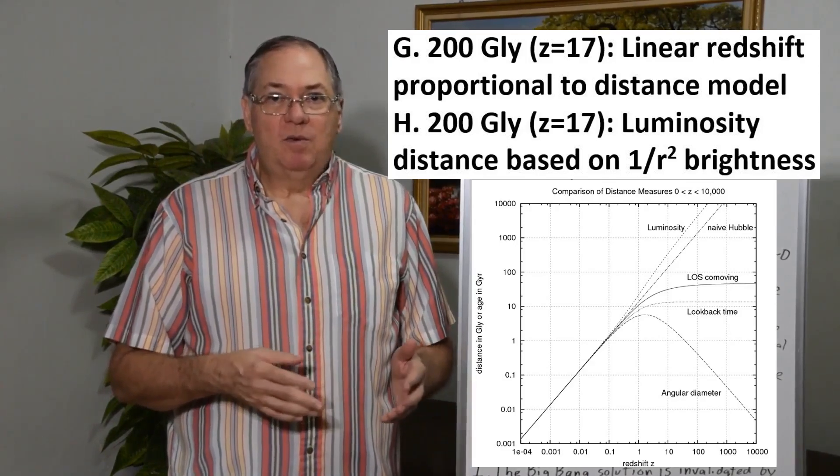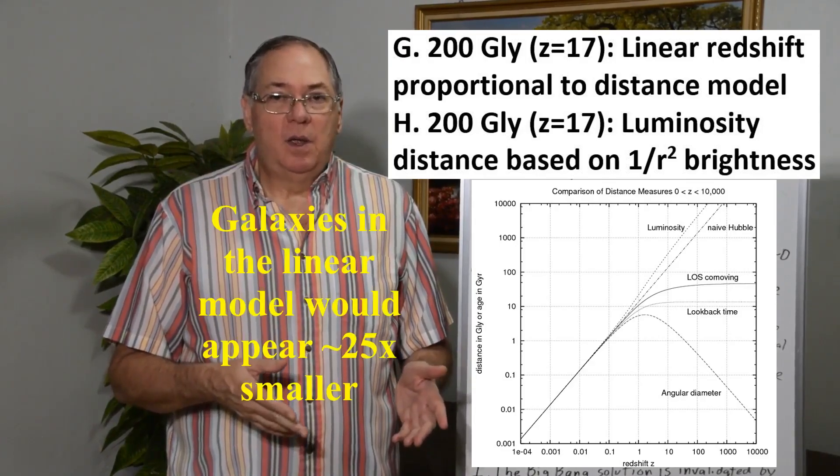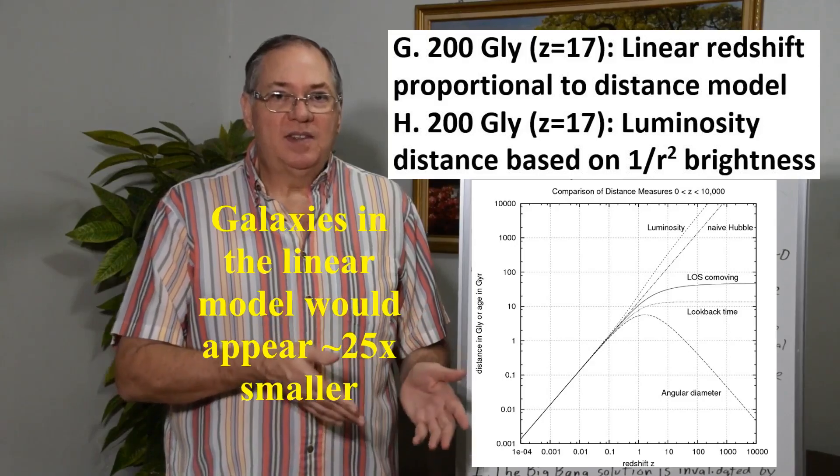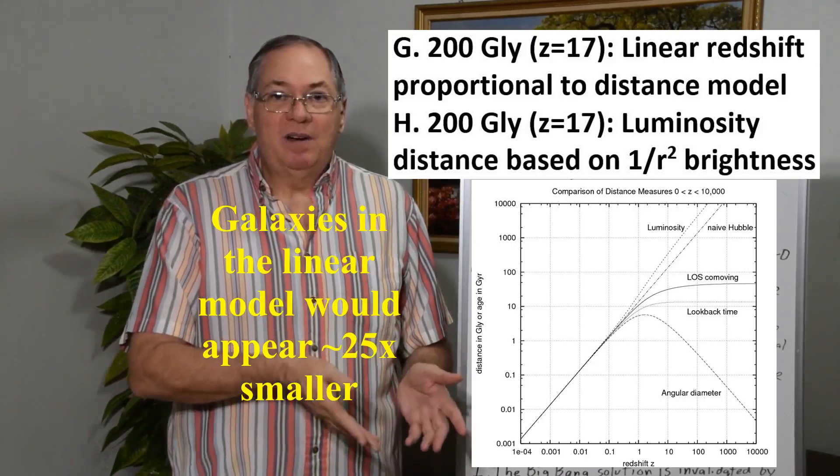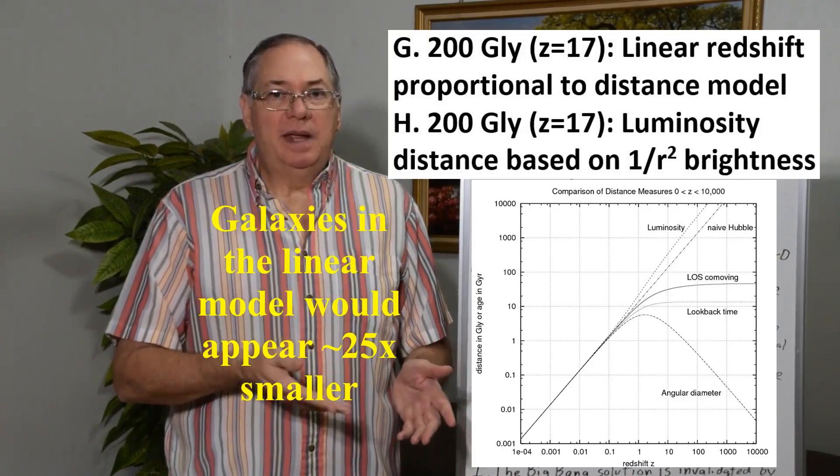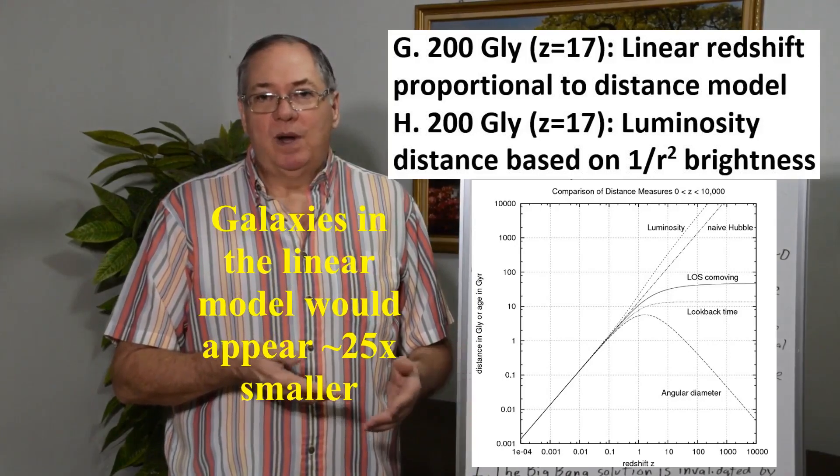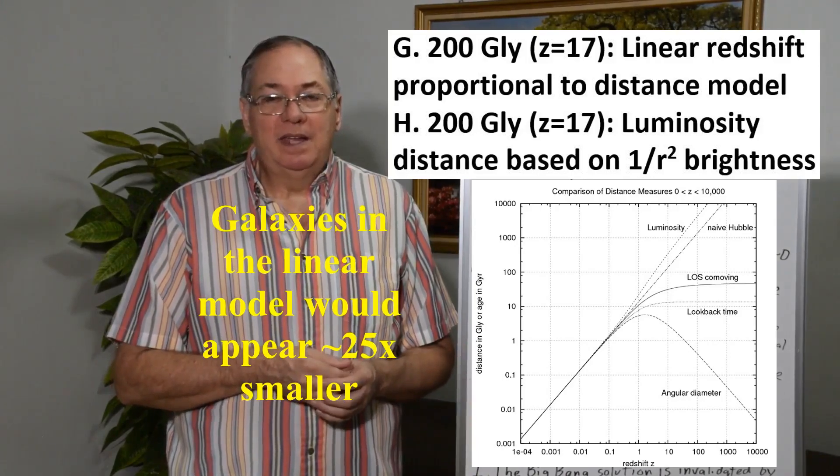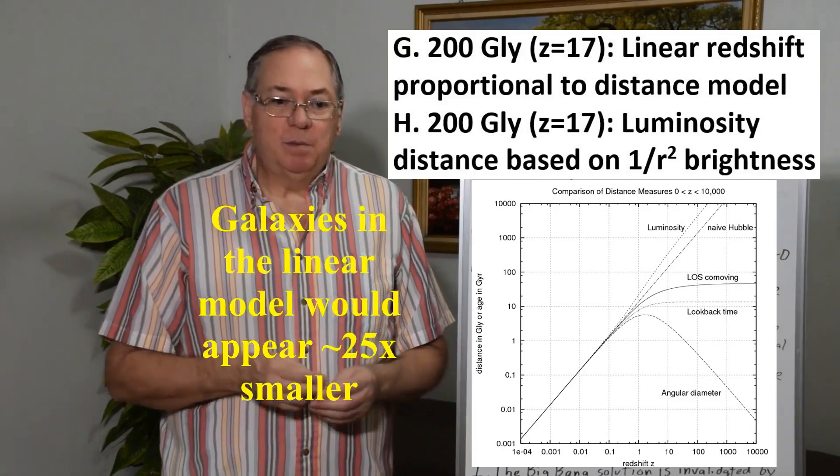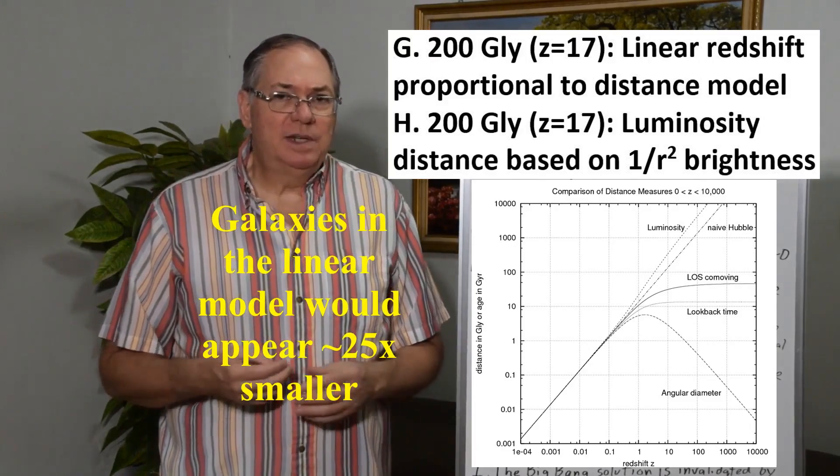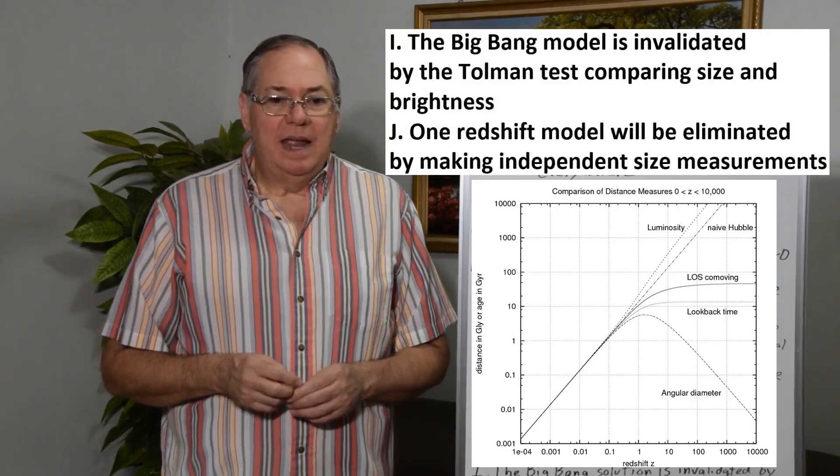So it could be a factor of 4 or 5 different, which, because the size of the galaxy varies with the square distance, means 20 to 25 maybe, which is observable. So we should be able to tell.